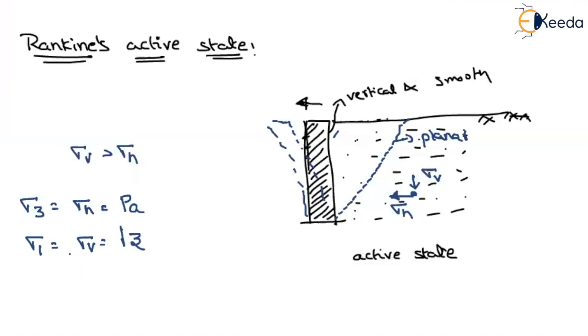Now, what is the relationship between minor and maximum principal stress? That can be written as sigma 1 will be equal to sigma 3 tan square alpha plus 2c tan alpha.